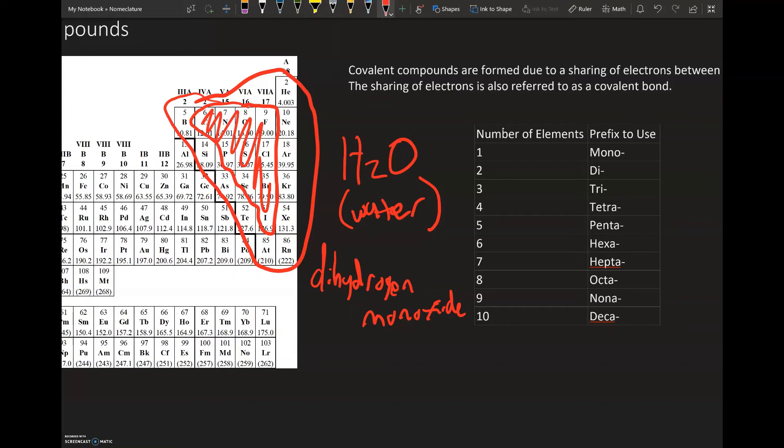Always make sure that you're using prefixes for covalent compounds. We don't use prefixes for any ionic compounds. In the discussion with ionic compounds in the other video, we only use Roman numerals for transition metals.